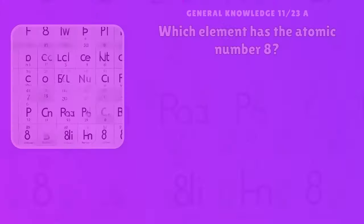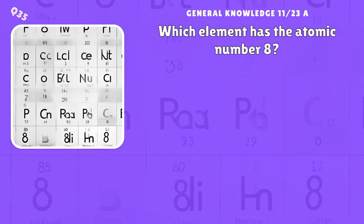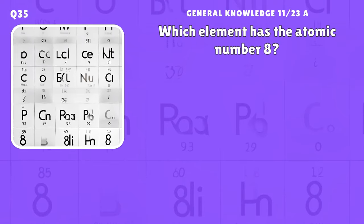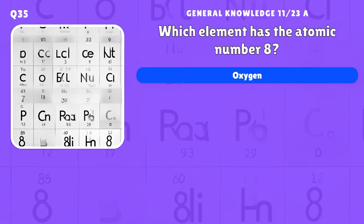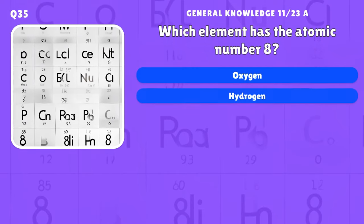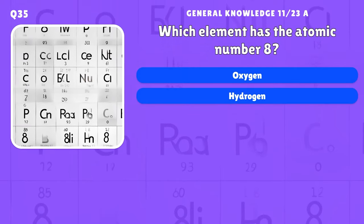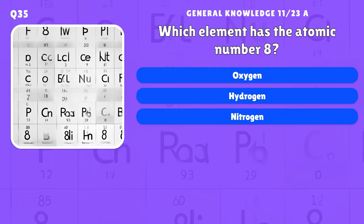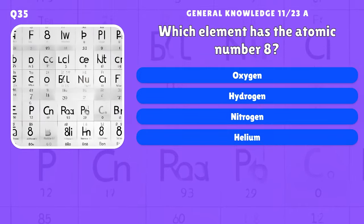Which element has the atomic number 8? A) Oxygen, B) Hydrogen, C) Nitrogen, D) Helium.